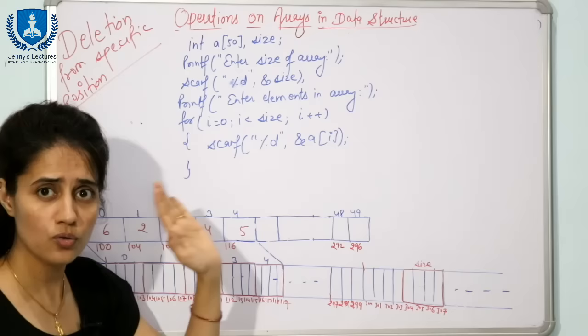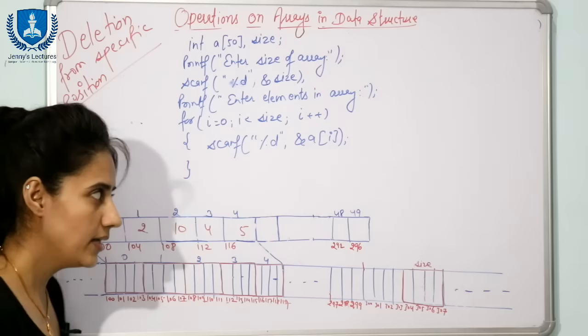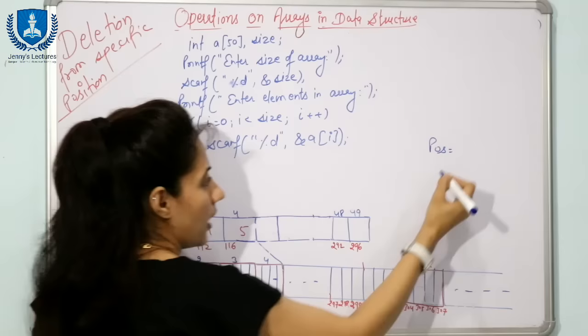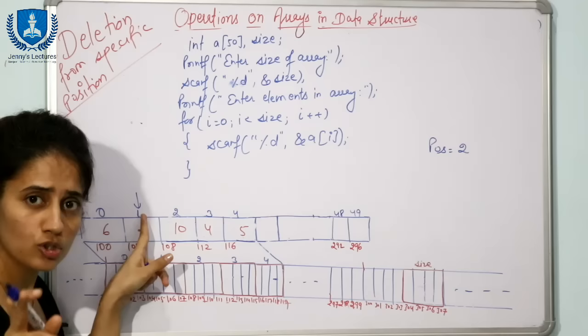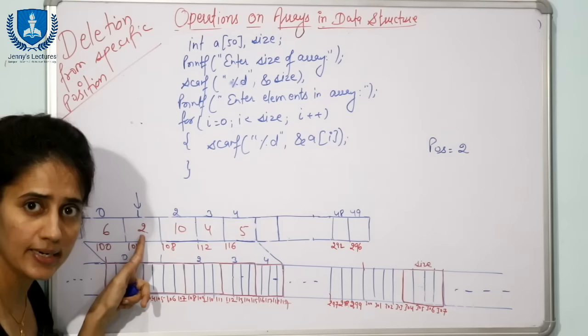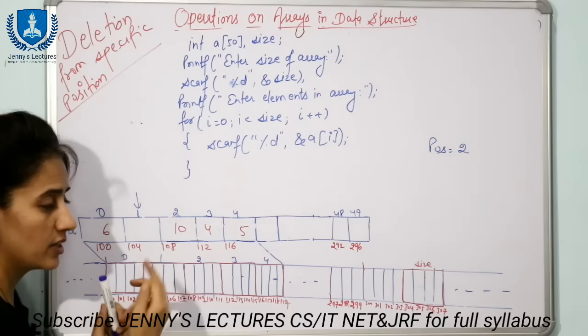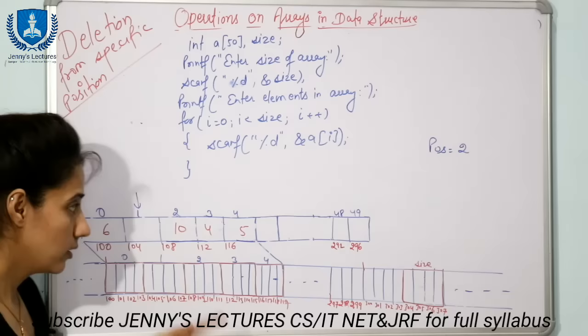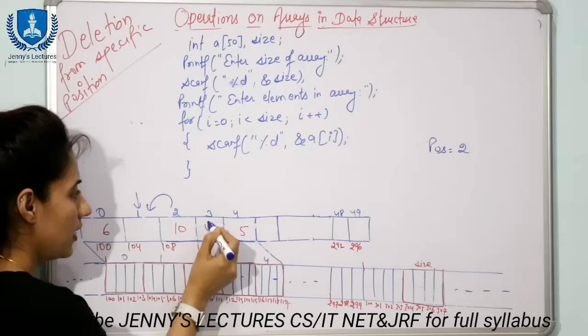Suppose the user has entered data into the array. Now we ask from which position they want to delete the data. Suppose they say position 2 — position 2 means index 1, since index and position are different things. So from position 2 (index 1), we want to delete the value 2. If you delete 2, you cannot leave a blank space, so you shift 10 left, then 4, then 5. After shifting, the size decreases by 1 — from 5 to 4.